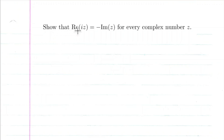Today we're going to show that the real part of i times z is equal to the negative imaginary part of z for every complex number z. So let's go ahead and start the proof.